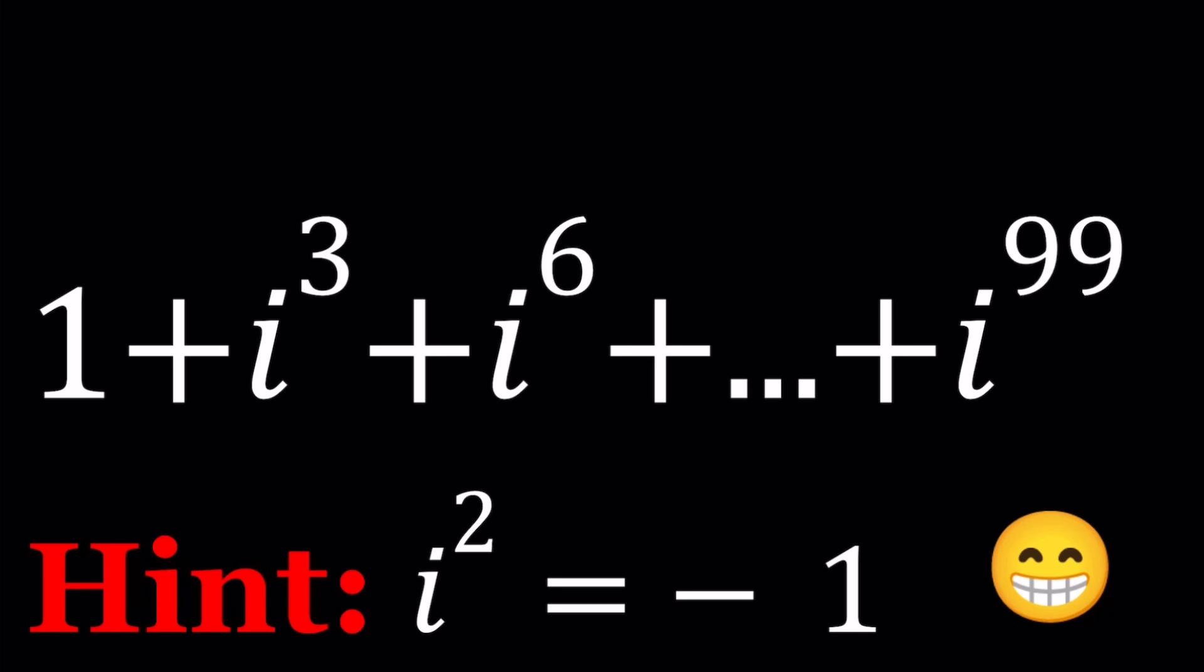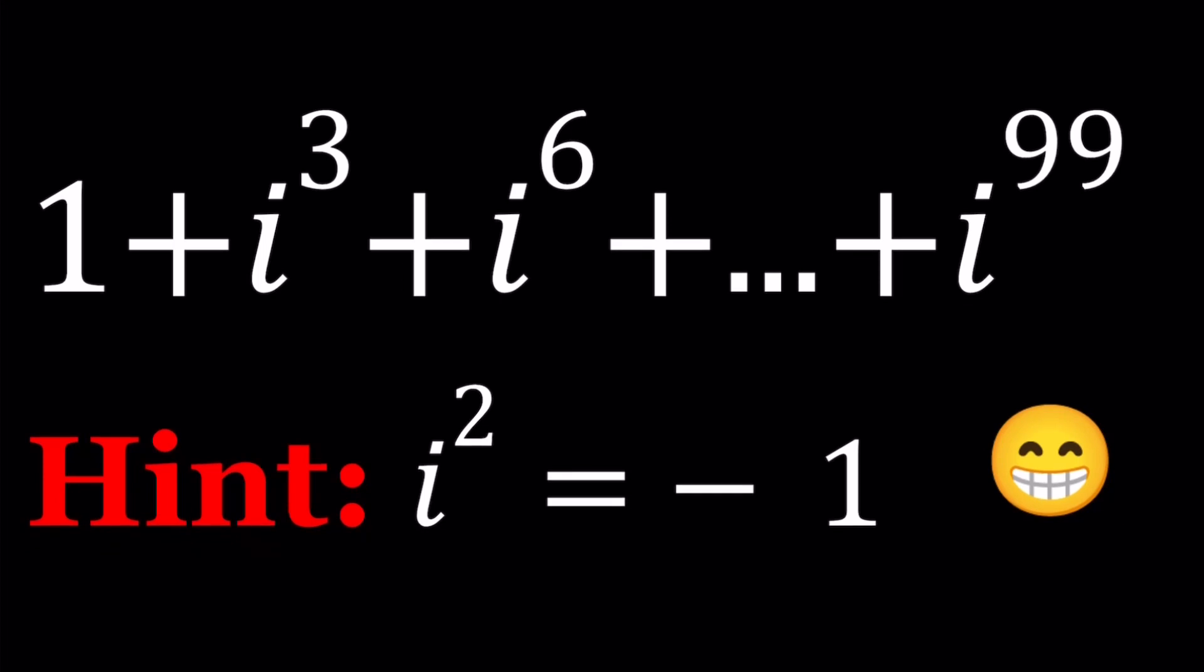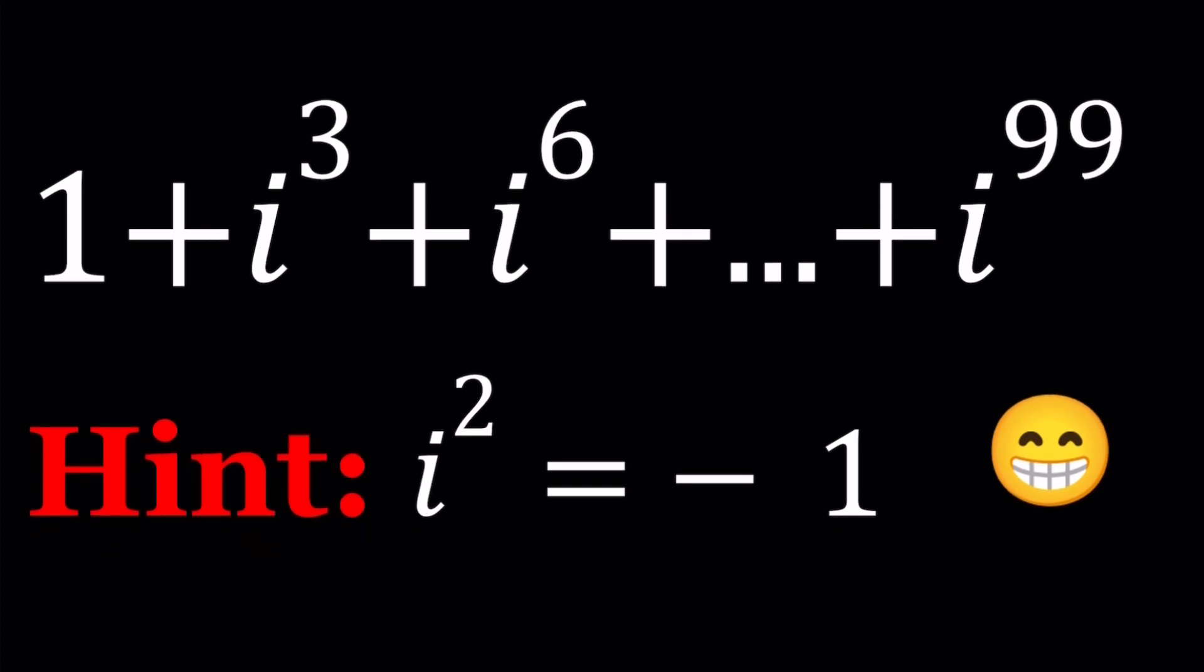Notice that all the powers are multiples of 3. We have i to the power 0 plus i to the power 3 plus i to the power 6 all the way up to i to the power 99. I just wanted to give you one of the biggest hints you can get with complex numbers: i squared equals negative 1. If there is one thing that you must know before you do anything, that will be this one. Great, so let's see how we can solve this problem in two different ways.